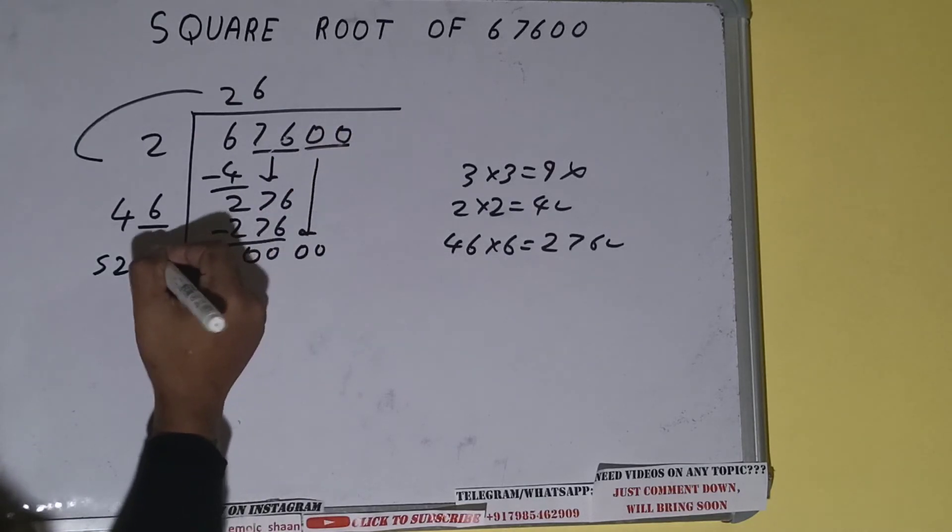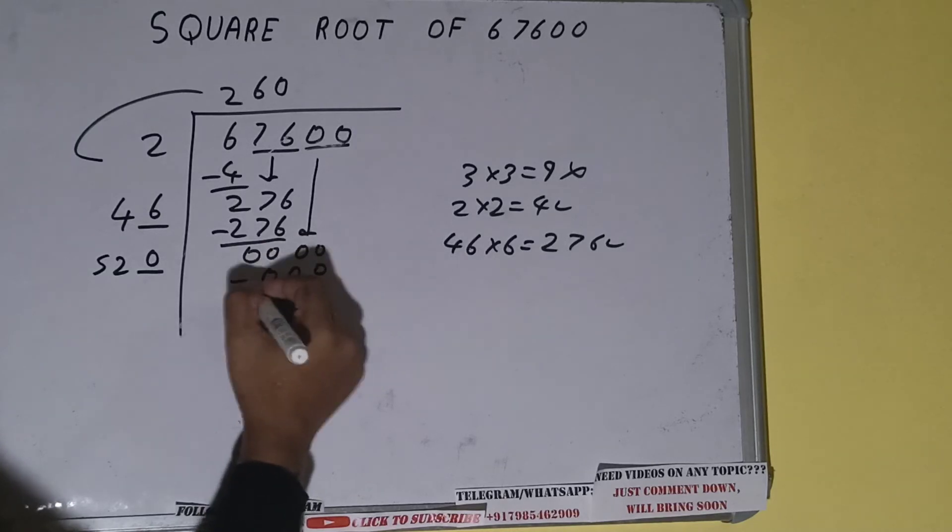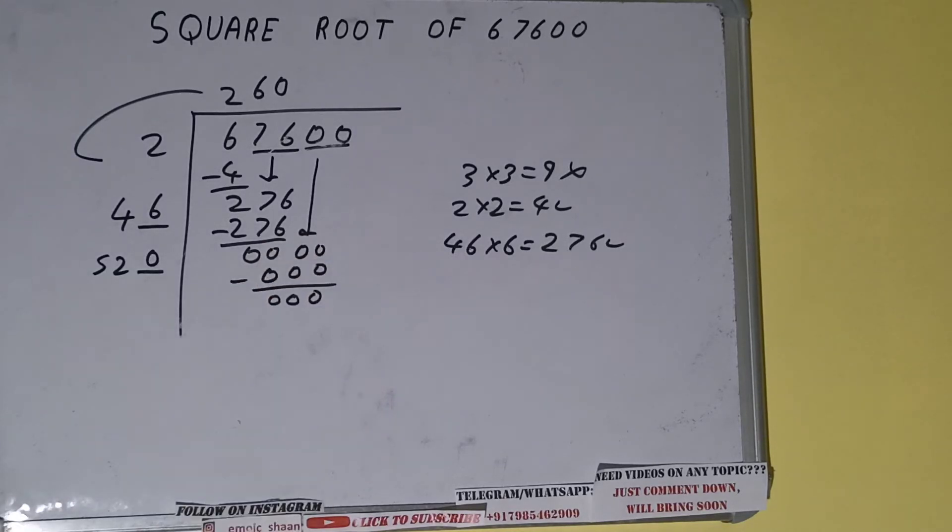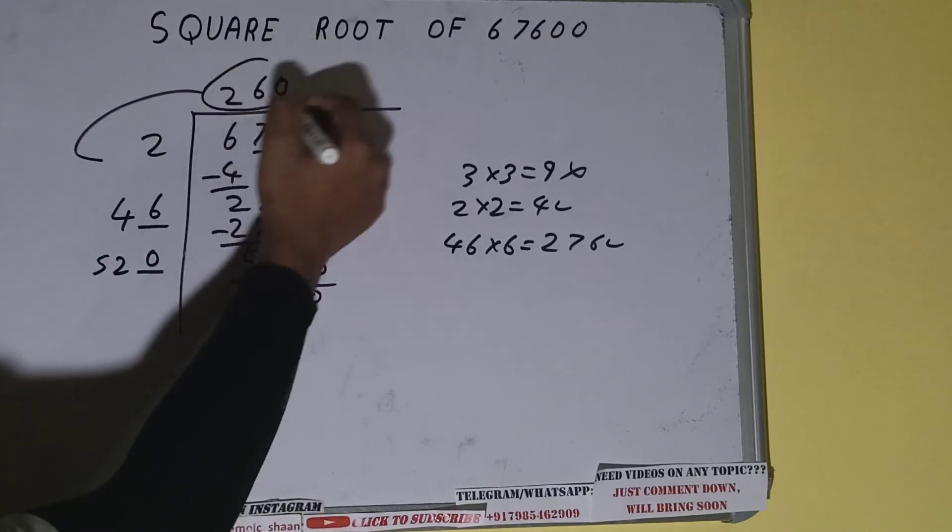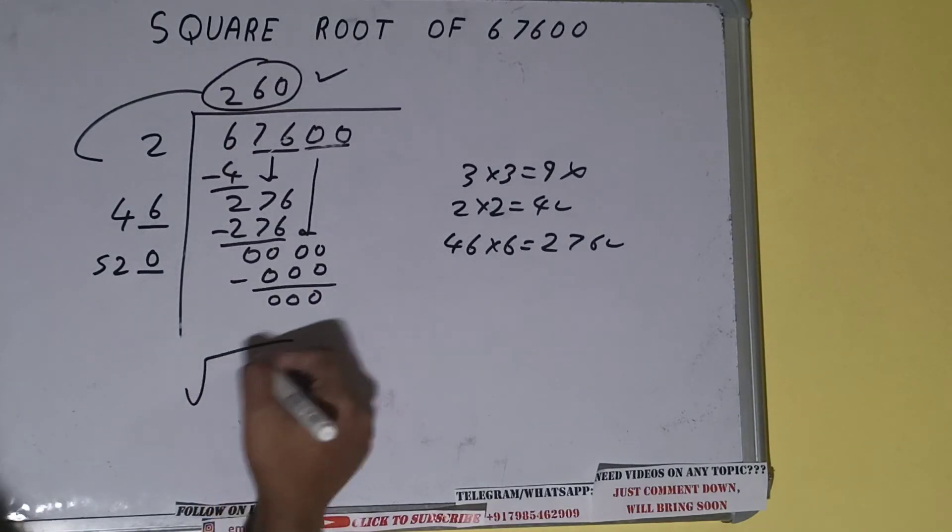And we'll put zero here and zero here. We'll get zero, and after subtracting, zero will be left. But now because we have divided this pair of zero, we have got the answer as 260. That's it. So square root of 67600 will be 260.